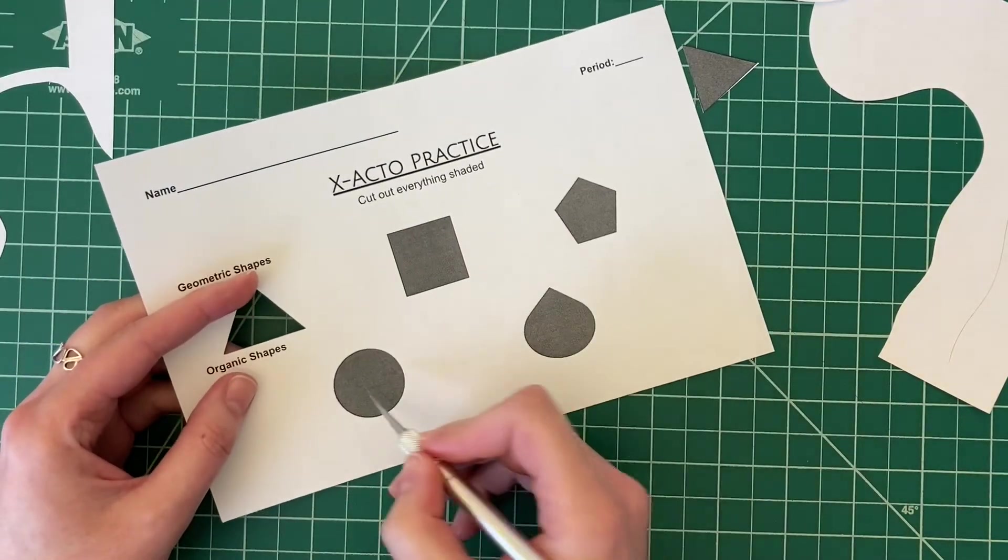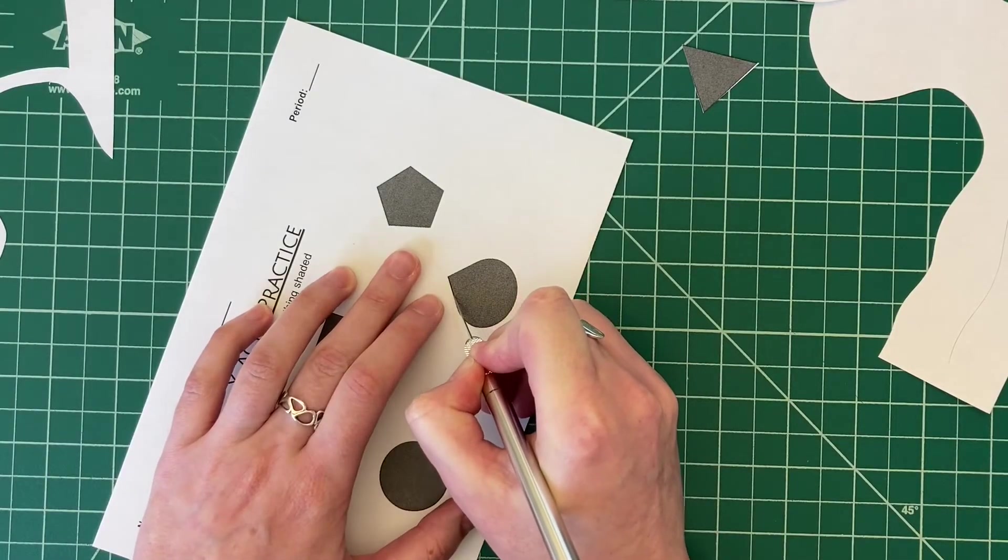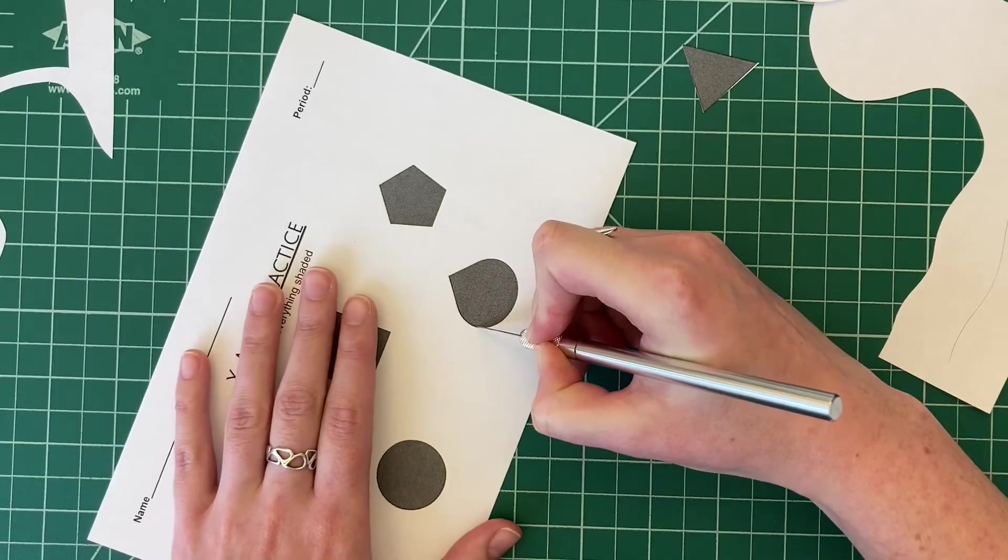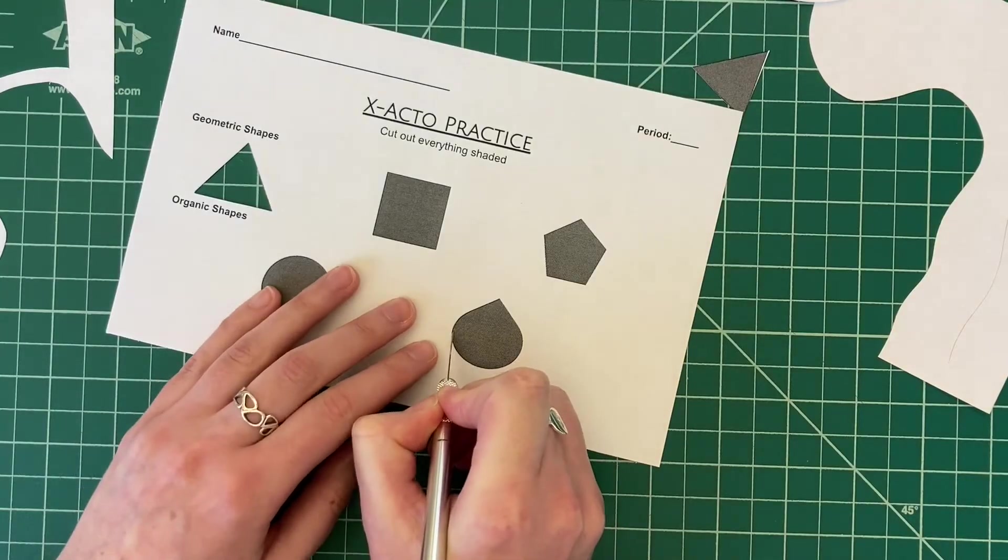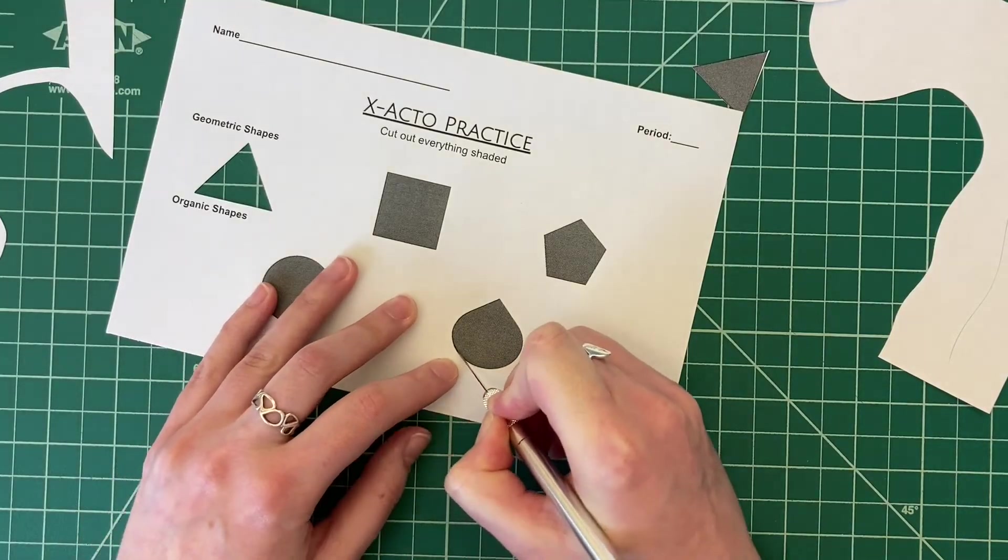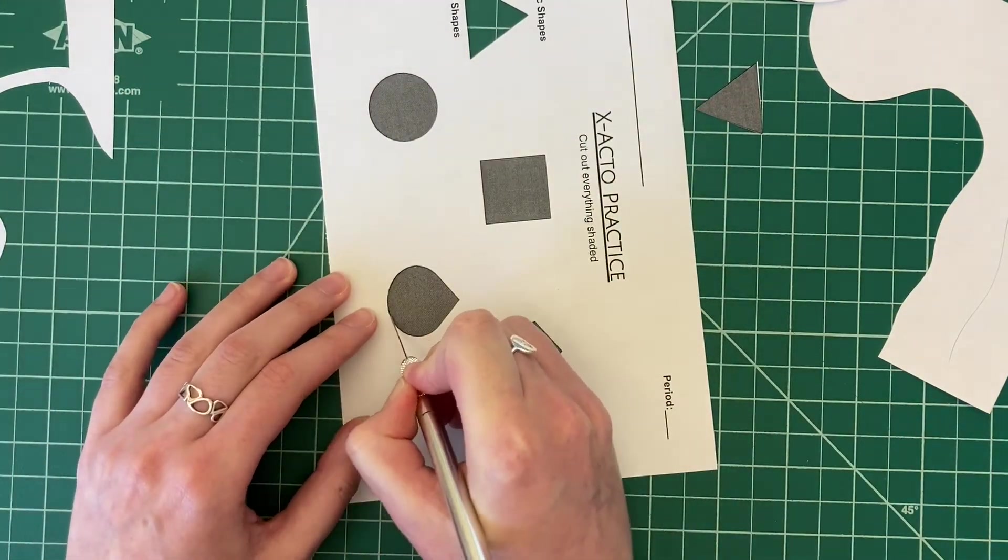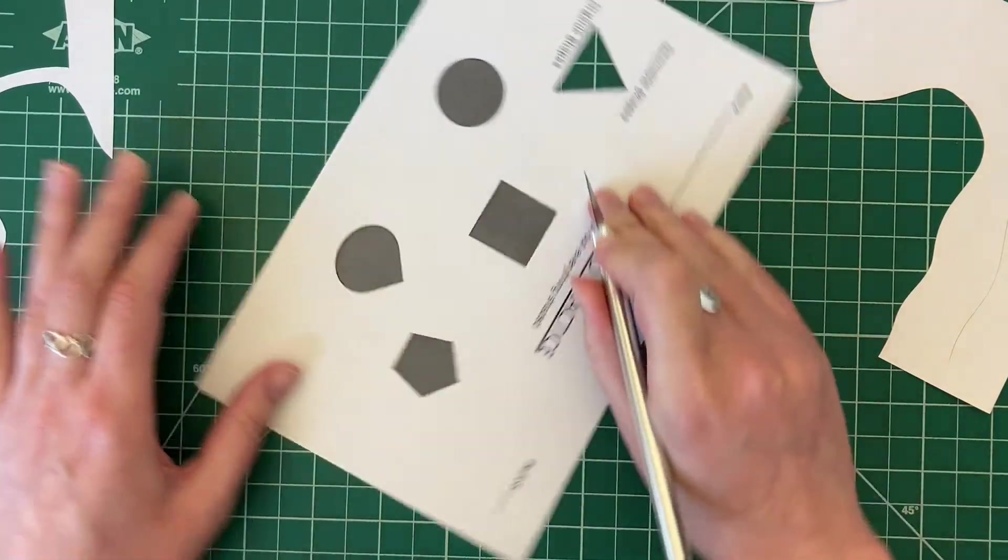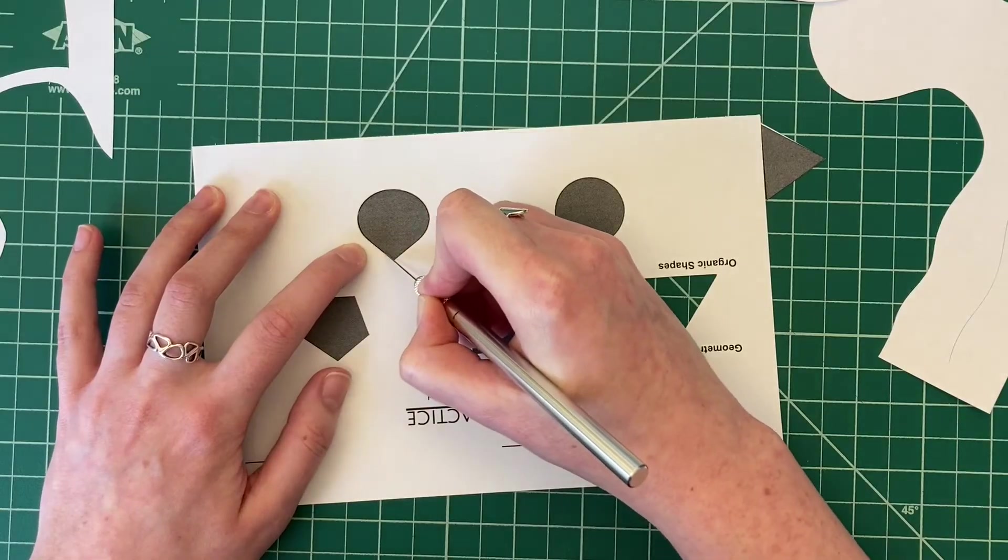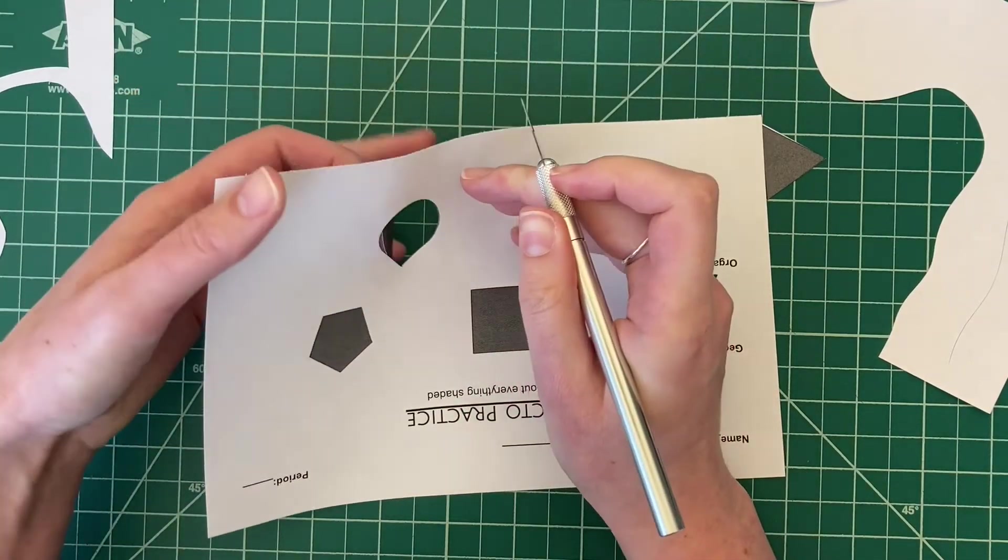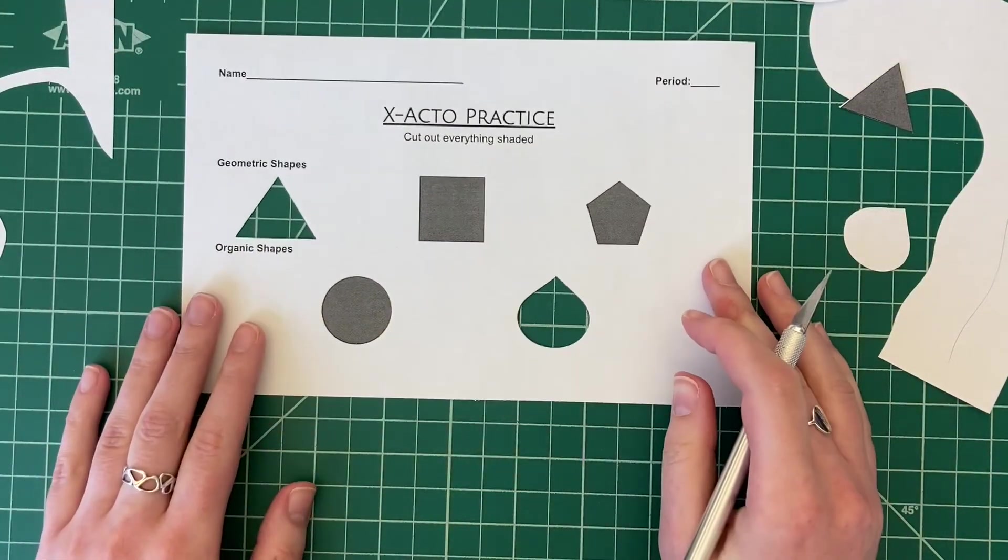Go ahead and do those. And then for these shapes down here where it has a curve, I'm going to do this one for you. I would start here, anchor and pull until I can't, until this becomes awkward. Turn my paper, anchor and pull, turning my wrist and the paper. Anchor and pull, anchor and pull. And that should pop out. So you're going to be able to complete this and turn that into me.